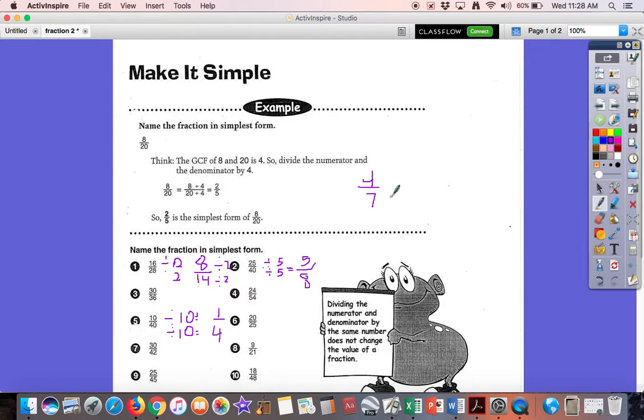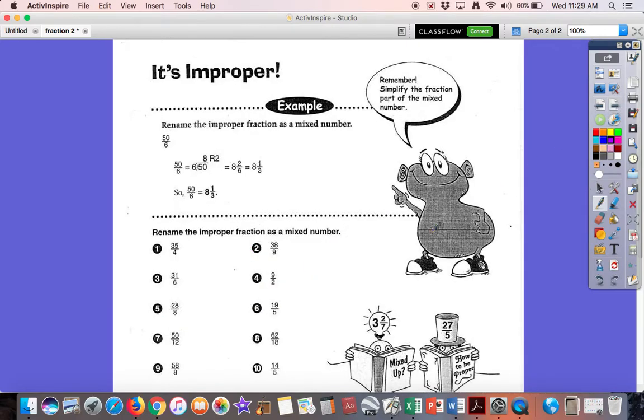Okay. So, that is as low as I can go. There's no more that can go into these two the same. There's nothing that can divide into both of those. So, what 8 fourteenths is compared to 16 twenty-eighths is an equivalent fraction. They're all the same. It's just that these have smaller numerator and denominators. Okay. So, you can use your multiplication table. All right. Let's go to the next page and take a look at this.